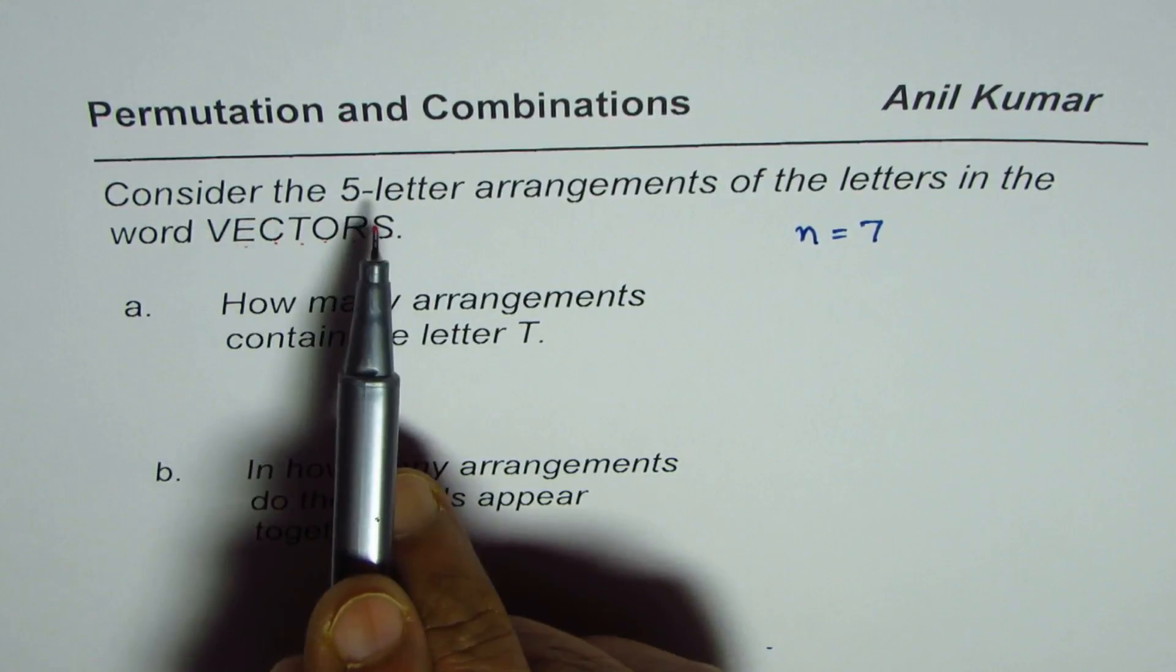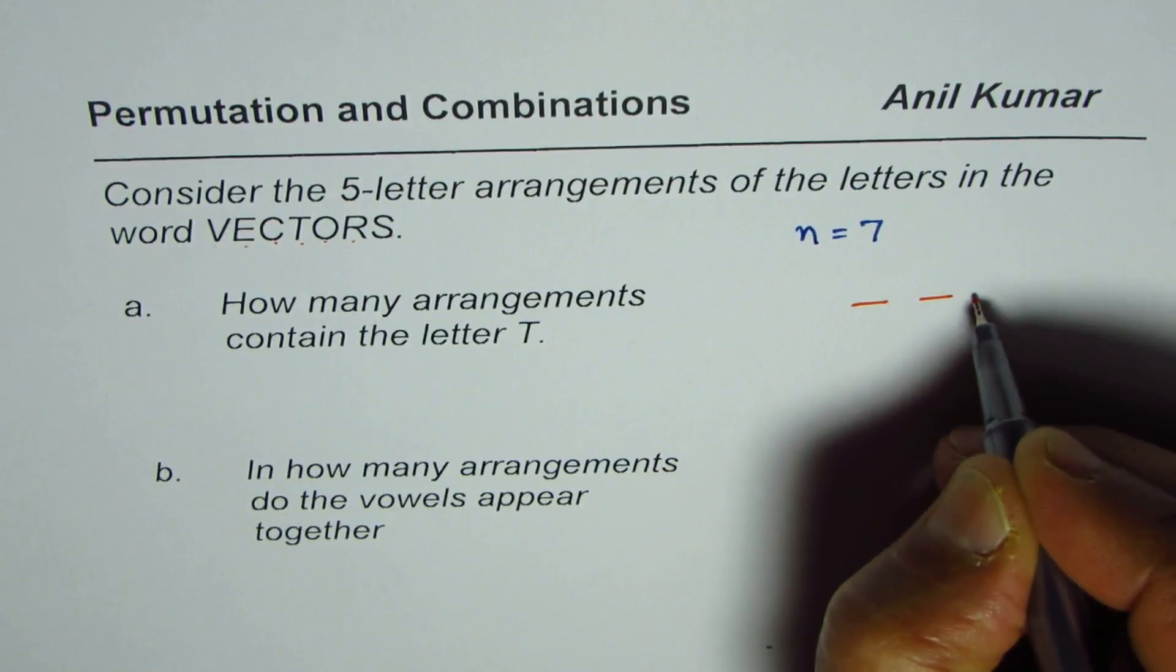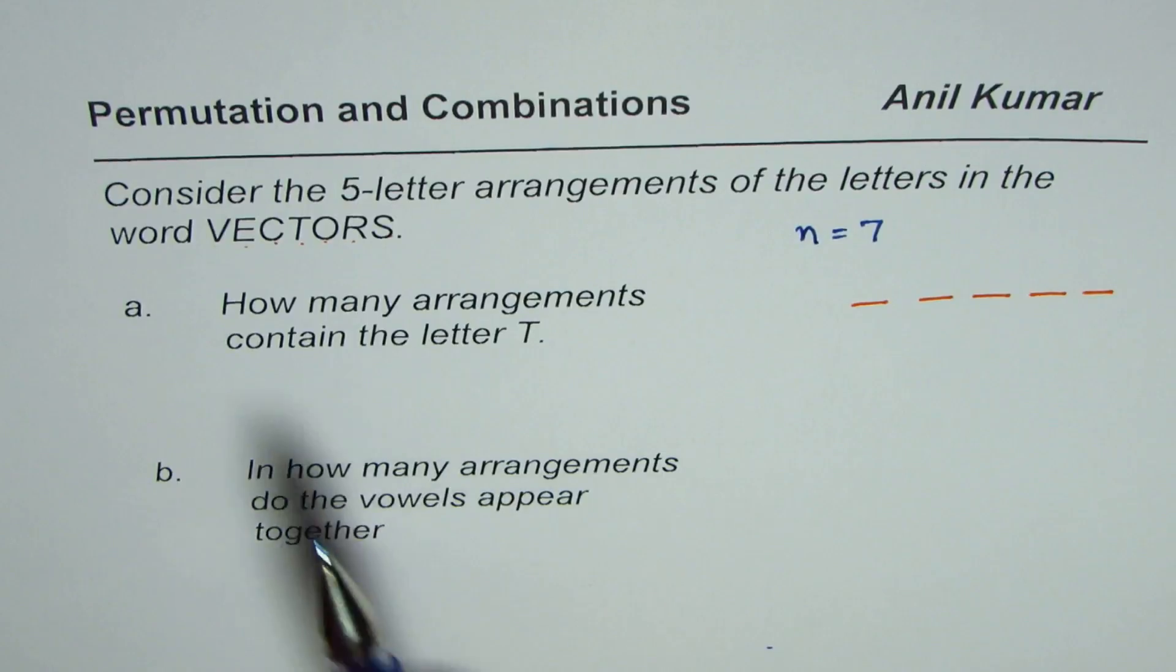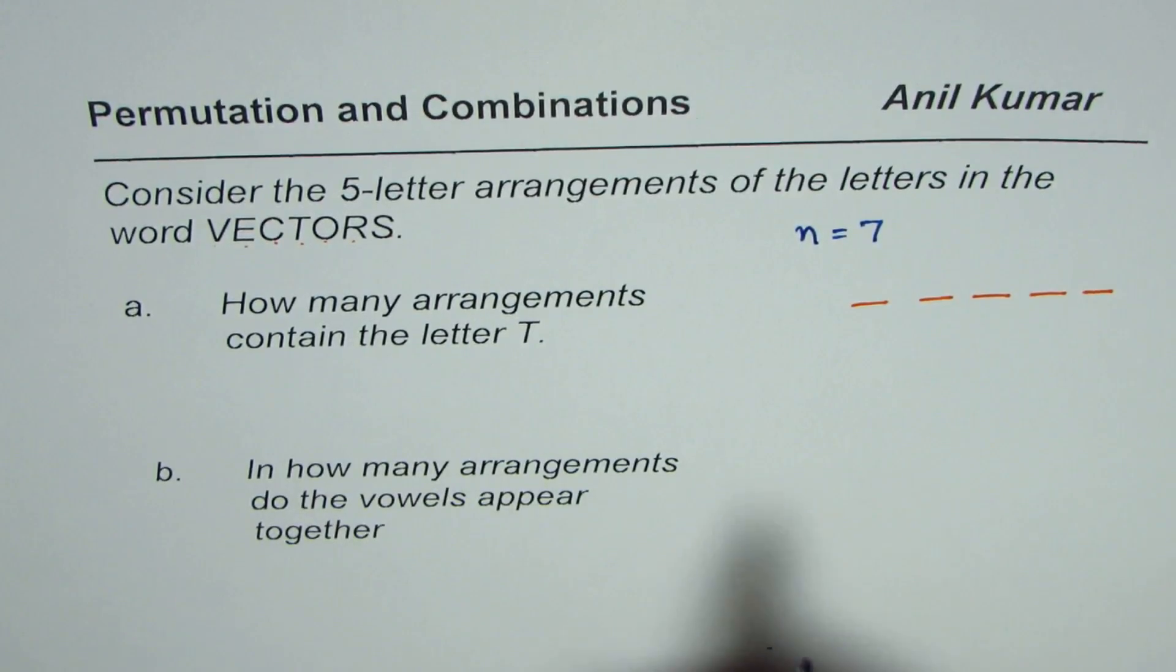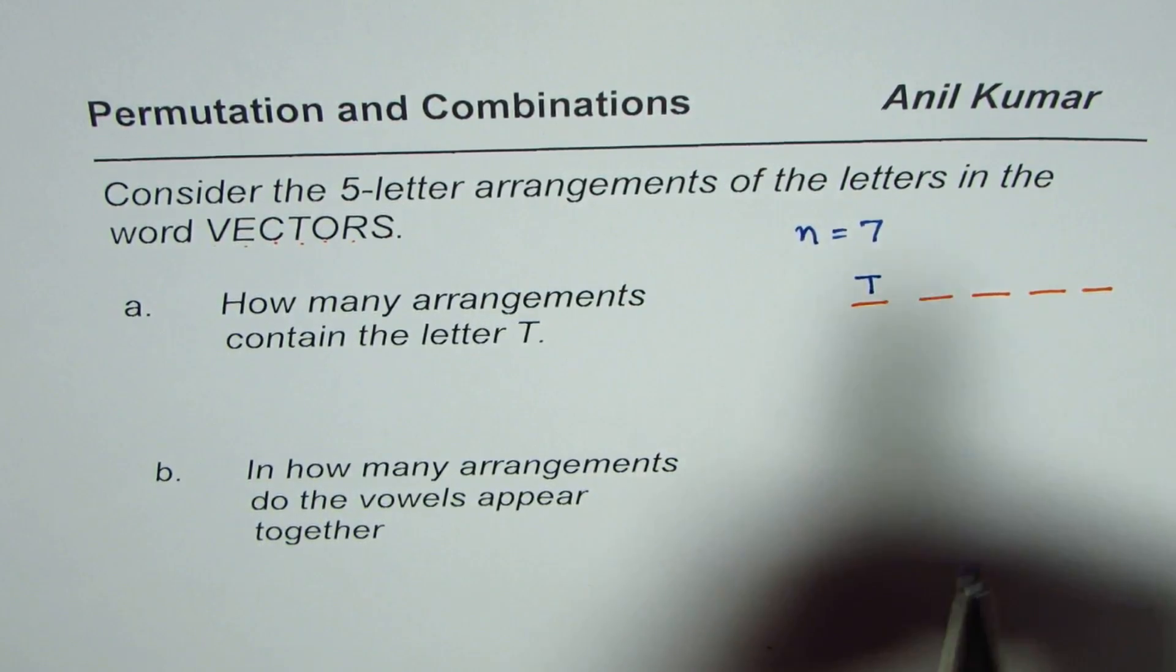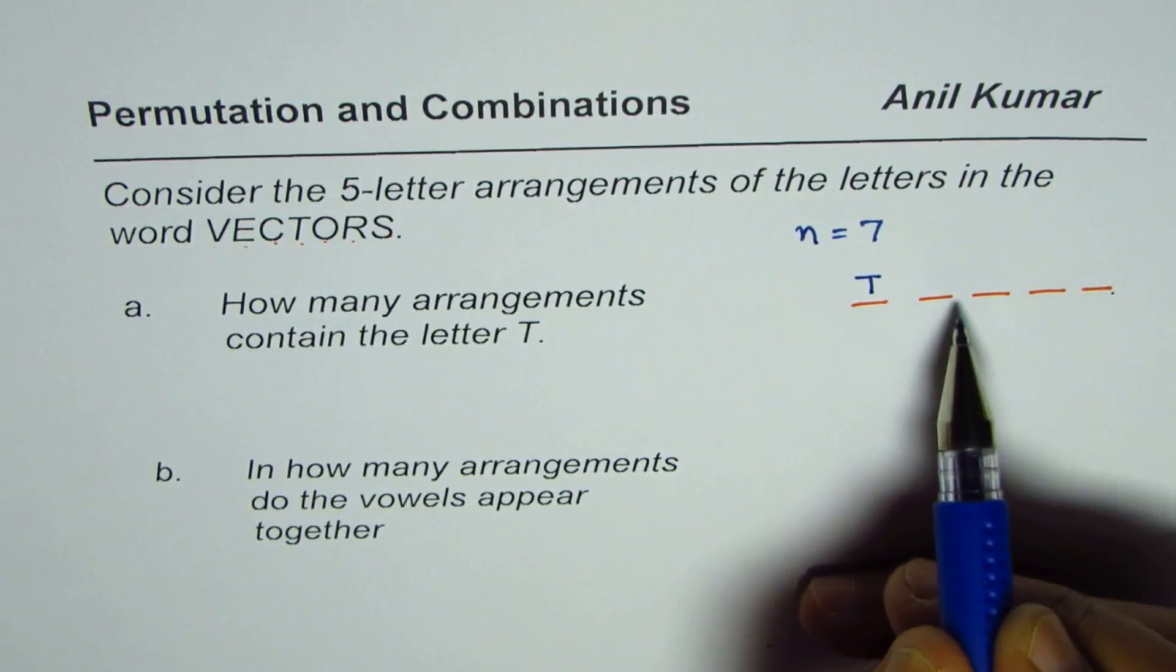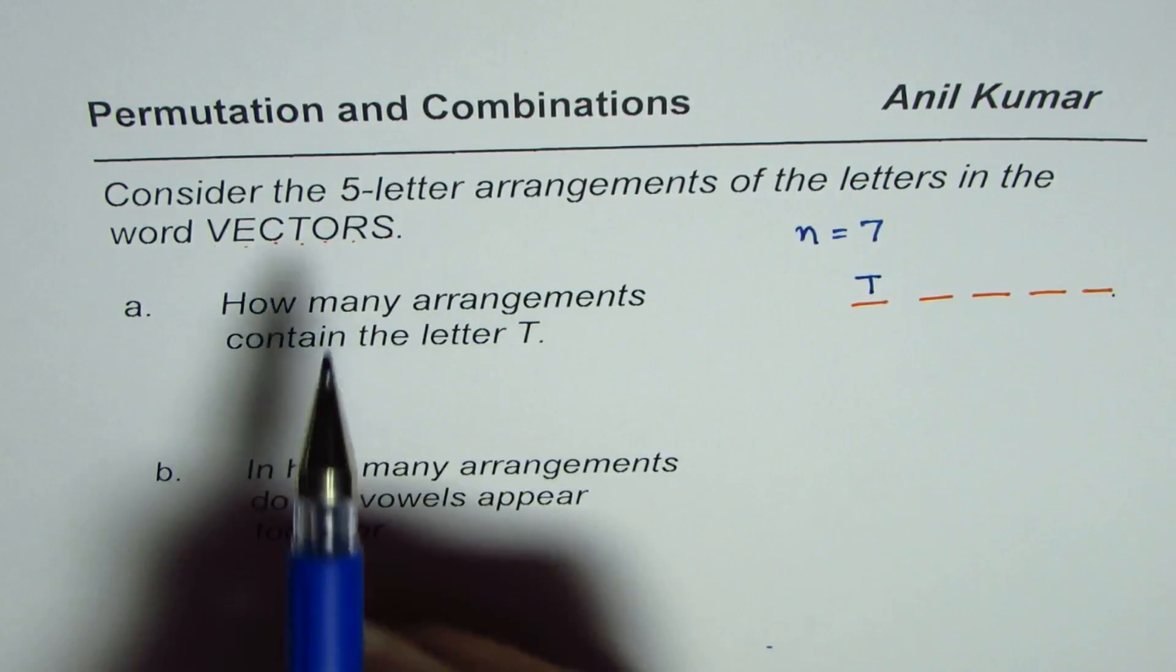Now we need to consider five-letter arrangements, so let's put five positions: one, two, three, four, five. How many arrangements contain the letter T? Let us say we make an arrangement with letter T. In that case, we could have four other positions and these four positions are filled with the remaining letters.